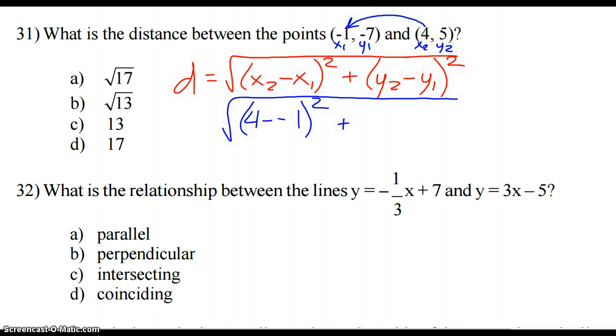All right, and then the 4 minus negative 1, minus a negative turns into plus. All right, now we've got to take our y's and subtract those. y₂ minus y₁ is 5 minus negative 7. Same deal. Those are going to turn into plus, minus negative. So here's what we've got.